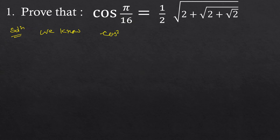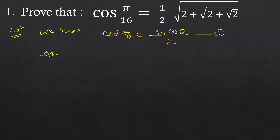We know cos²(θ/2) is equal to (1 plus cosθ) by 2 — suppose this is identity 1. And cos(45°), that is cos(π/4), is equal to 1 by √2, which is equal to √2 by 2.